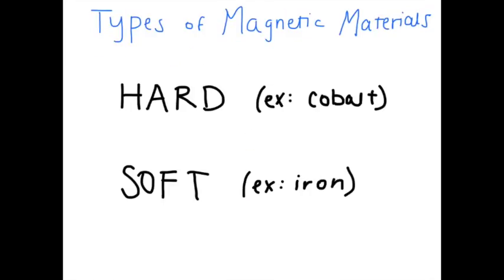There are two main types of magnetic materials. The first is known as a hard magnetic material, for example, cobalt. These materials are more difficult to magnetize. However, their magnetic domains still exist after an external magnetic field has been removed.